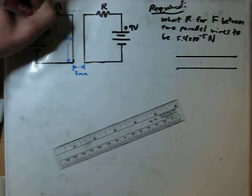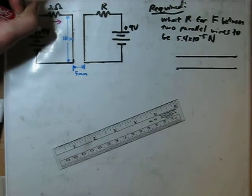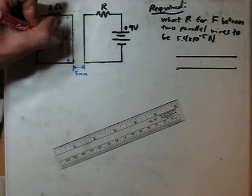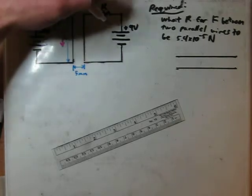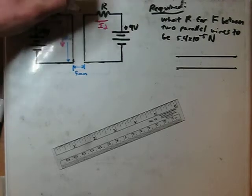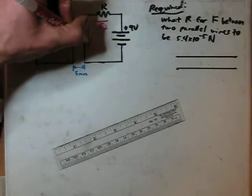If you have this current going this way, this is the positive side of the battery. So you have I1 flowing down through this parallel wire, and you have I2 over here flowing down through this parallel wire.